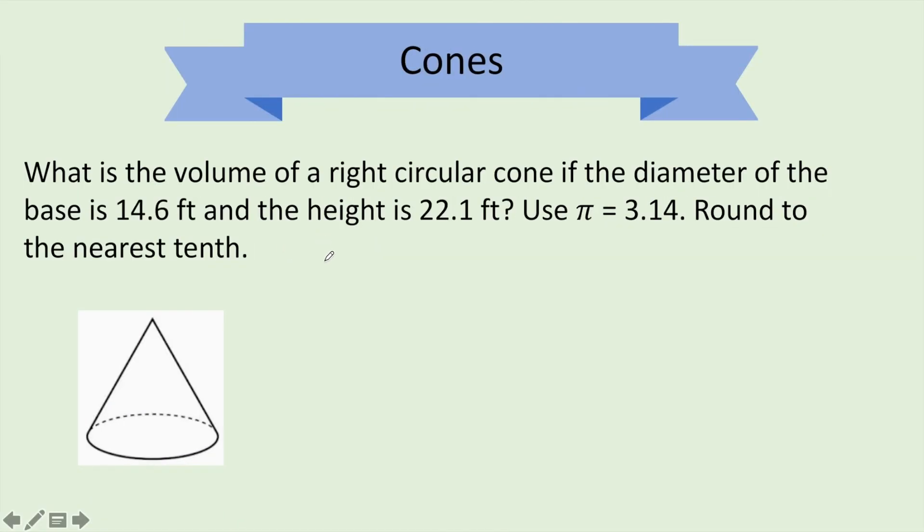Next problem. Find the volume of the right circular cone. So we're going to pull our formula off our formula sheet. 1.3 pi r squared h. This says the diameter is 14.6. We need the radius. Radius is half.